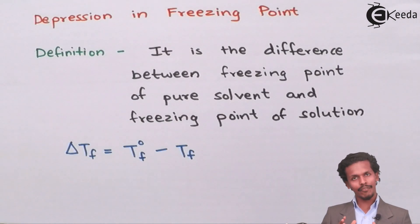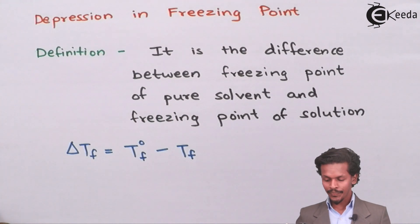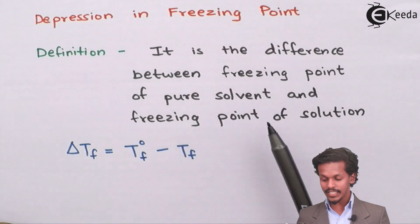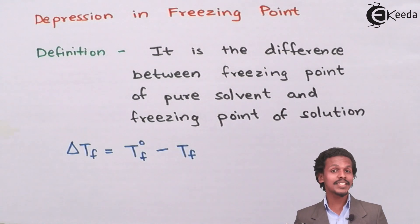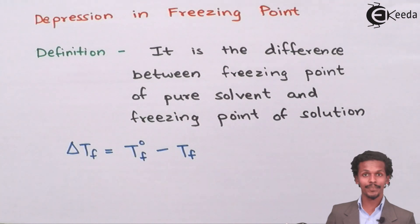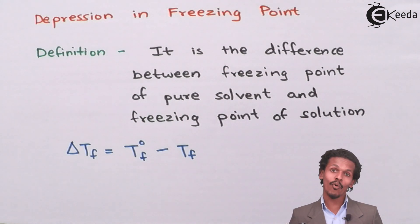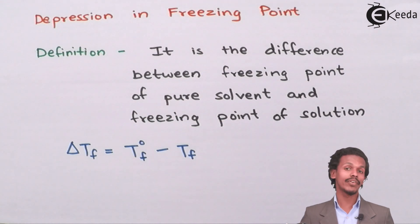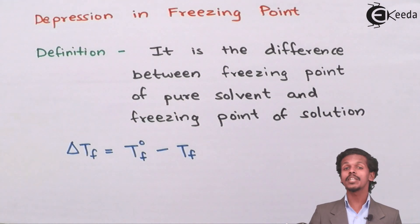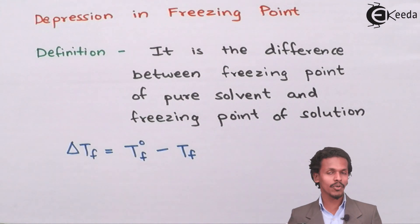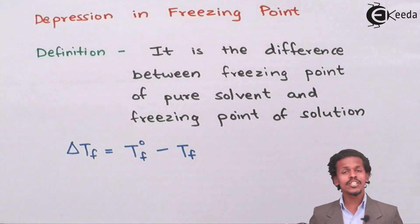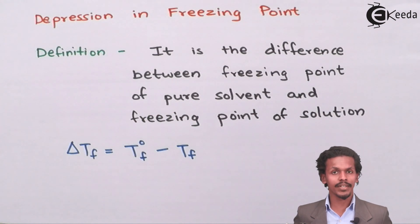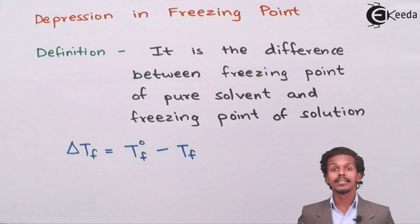Now let us see what is depression in freezing point. It is defined as the difference between the freezing point of the pure solvent and the freezing point of the solution. You should be very careful here and understand why the pure solvent is written first and then the solution. As you know, the freezing point of water is zero degrees Celsius.